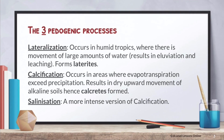There are three main pedogenic processes. Firstly, lateralization, which occurs in the humid tropics and forms laterites — basically oxide minerals — requiring a huge amount of water. Next, calcification, which tends to occur in your BSH or savannah climates — not very wet, but not as dry as a desert — where alkaline soils and calcetes are formed. Lastly, salinization, which is basically a more intense version of calcification. We'll go through the different horizons for each one of these in depth.